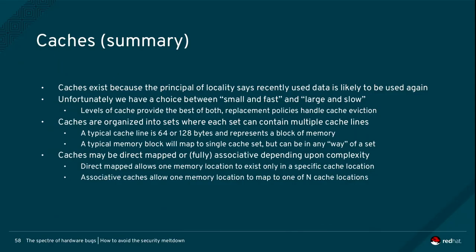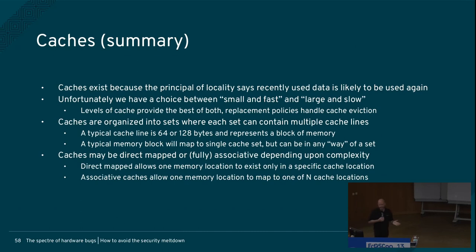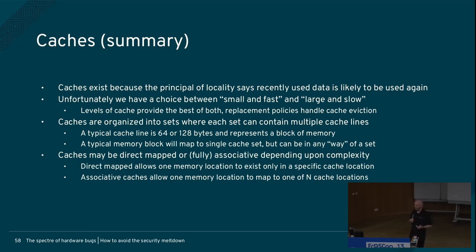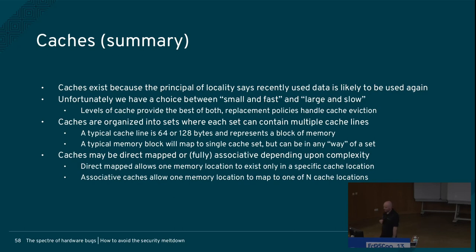Caches exist because the principle of locality says things I've used recently I'm likely to use again. In hardware we have a choice between small and fast, and big and slow. Caches are pretty tiny because they can run at the same speed as the core logic inside my processor. As I get further away, I have bigger and bigger caches that are slower. It's important to understand that caches have different latency.